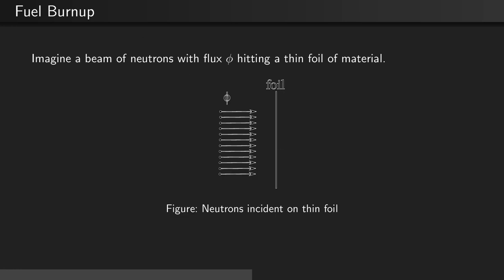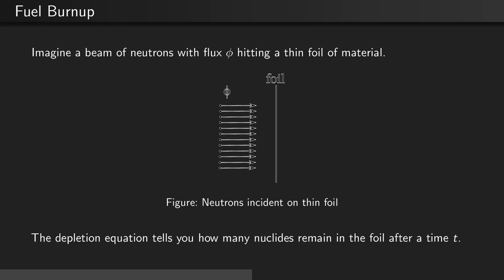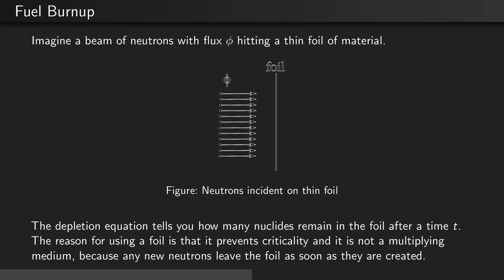Let's imagine a beam of neutrons with an incident flux phi hitting a thin foil of material, as seen in this figure. The depletion equation tells you how many of the original nuclides remain in the foil after a time t. The reason for using a foil is that it prevents criticality and it is not a multiplying medium, because any new neutrons that are created leave the foil just as soon as they are created.